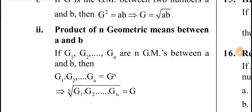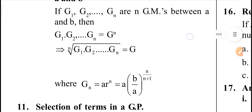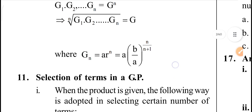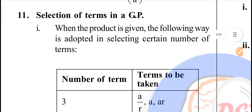Next, product of n geometric means between A and B. Selection of terms in GP: when the product is given, the following ways are adopted for selecting certain numbers of terms.